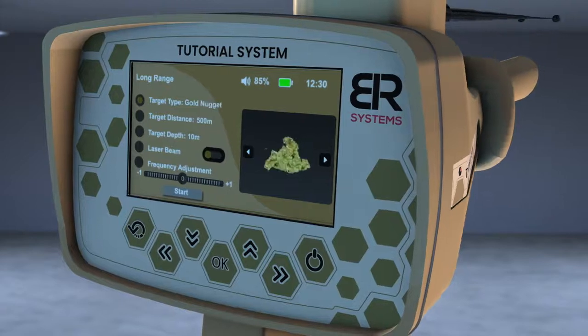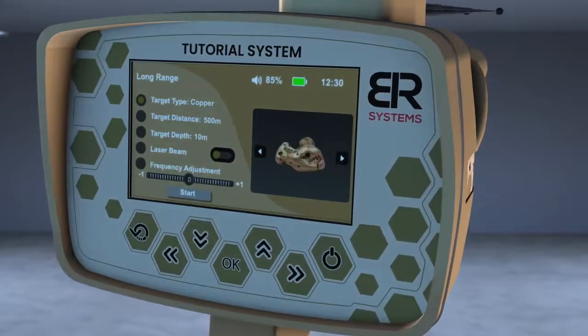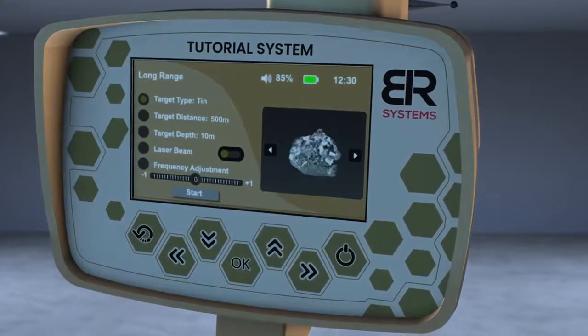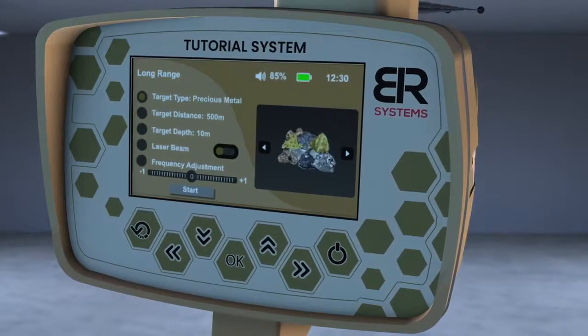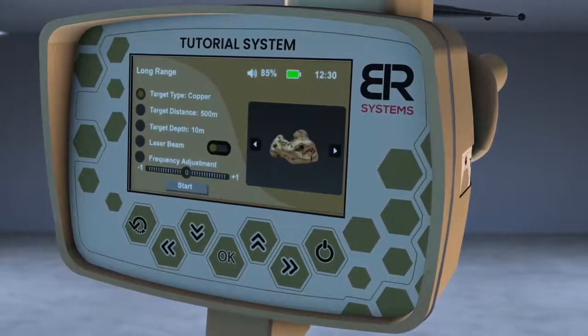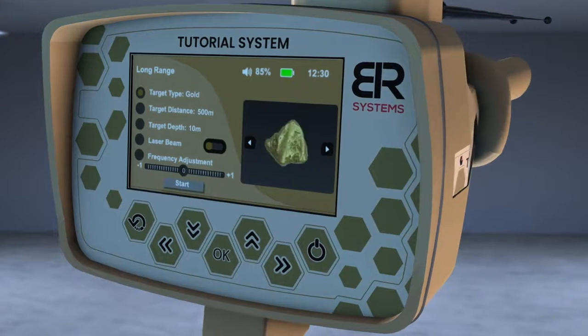A screen will appear to specify the characteristics of the target before the search process. Select the target to search for using the right and left arrows from the screen interface, for example, gold.